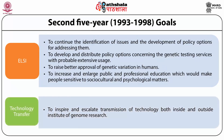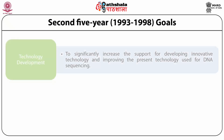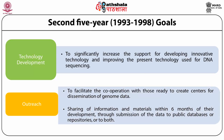The next goal was technology transfer, involving inspiring and escalating transmission of technology both inside and outside the Institute of Genome Research. The next goal was technology development, involving significant increase in support for developing innovative technology and improving present technology used for DNA sequencing. The last goal was outreach, which meant facilitating cooperation with those ready to create centers for disseminating genome data and sharing information and materials within 6 months of their development through submission to public databases.